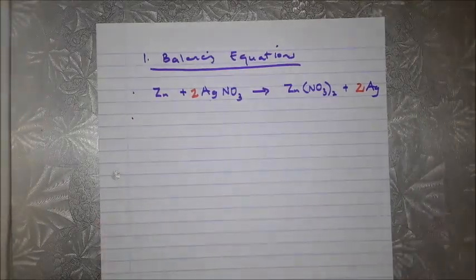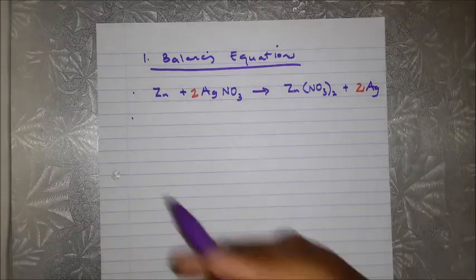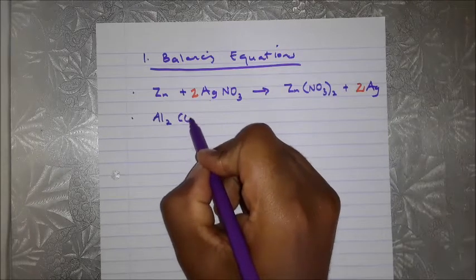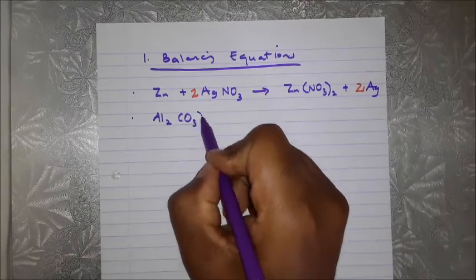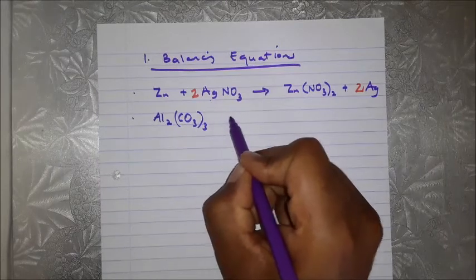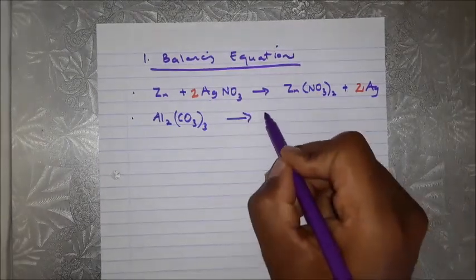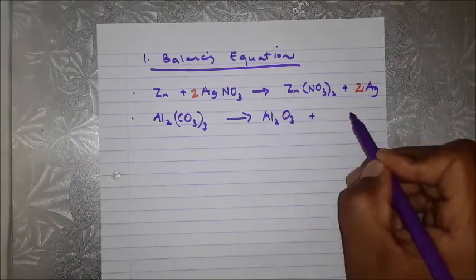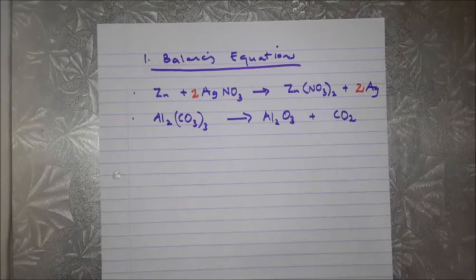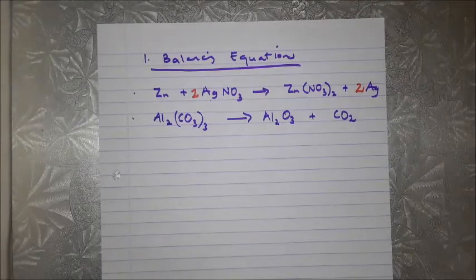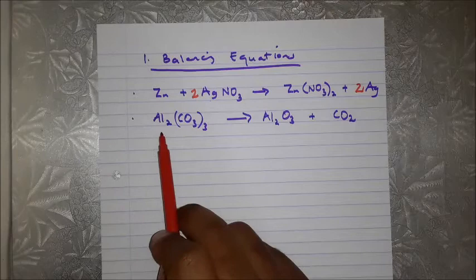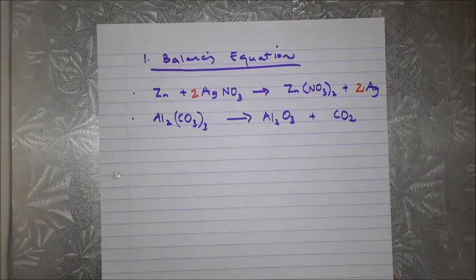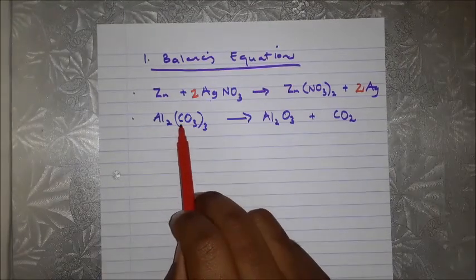The second equation received was Al₂(CO₃)₃ decomposing to give Al₂O₃ plus CO₂. Looking at aluminium: we have two on the reactant side and two on the product side — done.